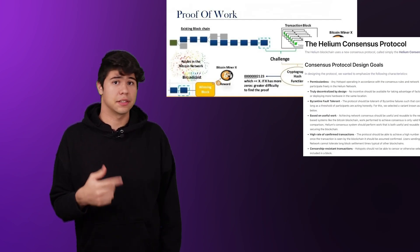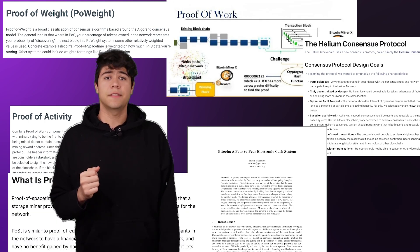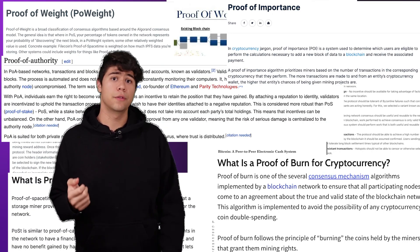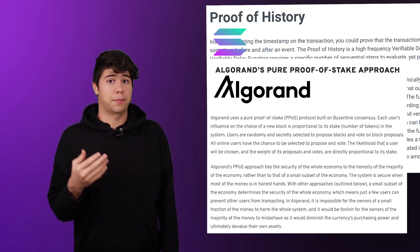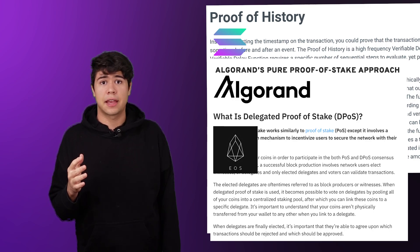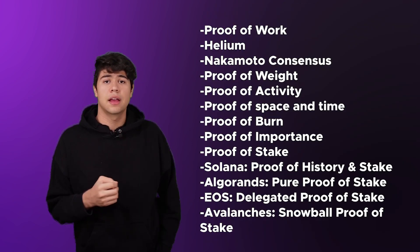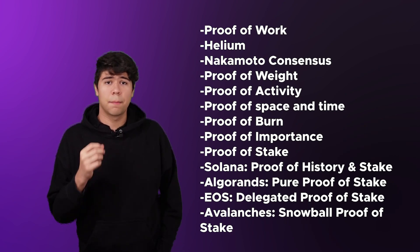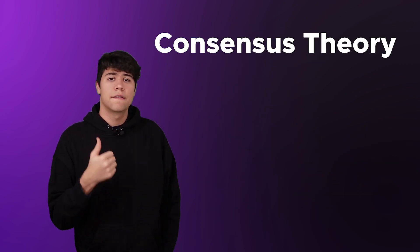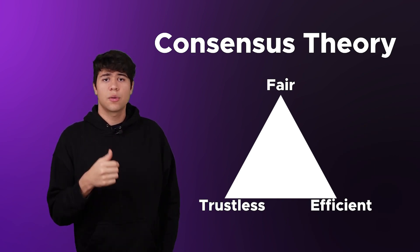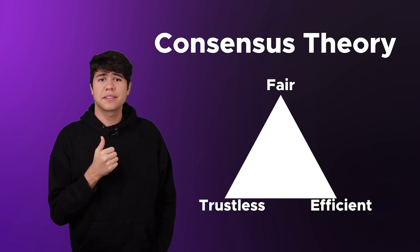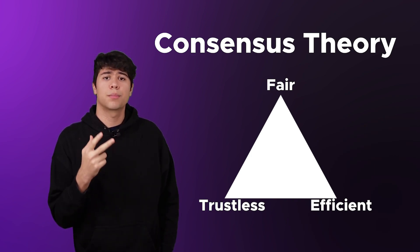There are a lot of different consensus mechanisms for blockchains. You have proof of work, helium consensus, Nakamoto consensus, proof of weight, proof of activity, proof of space and time, proof of authority, proof of burn, proof of importance, and of course proof of stake — and even that has multiple flavors: Solana's proof of history with proof of stake, Algorand's pure proof of stake, EOS's delegated proof of stake, Avalanche's snowball proof of stake, and the list goes on. Most blockchain consensus can be divided into three categories: fair, trustless, and efficient. But it's a trilemma — you can only pick two at most. They all basically divide into proof of work, proof of stake, and federated consensus or proof of authority.